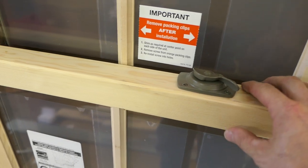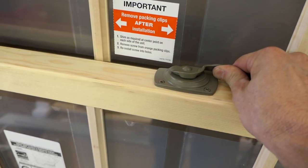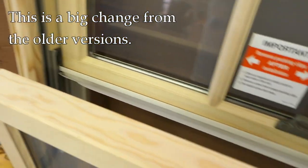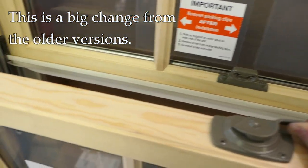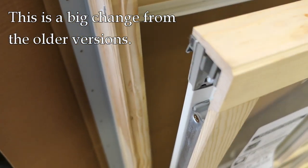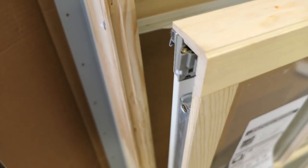This lock serves two purposes. It locks the two sashes together, but if you push it in, it also allows the window to tilt. This is what's different from the old version versus the new.